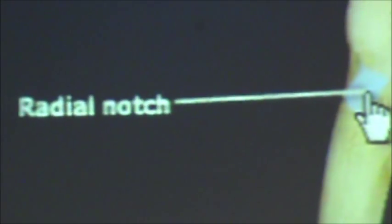Next to the coronoid process, we have the radial notch, which, as you can see here, articulates with the radial head, which we'll talk about in a different video.